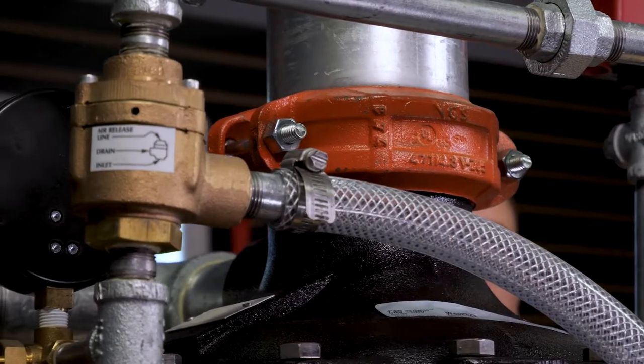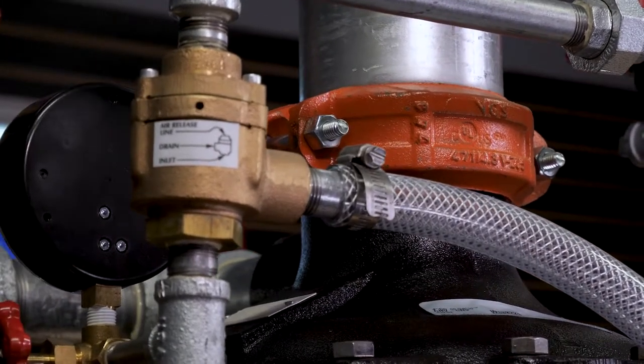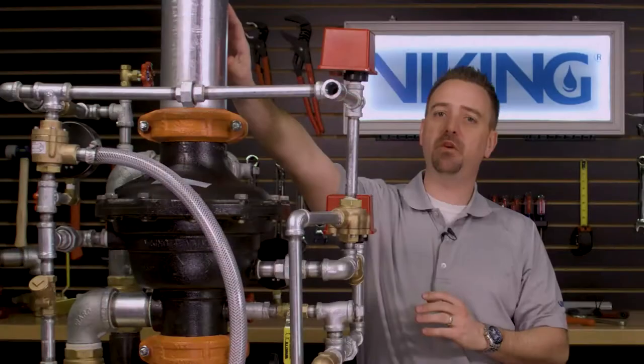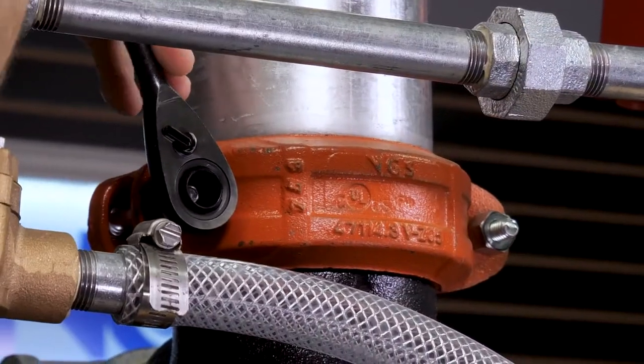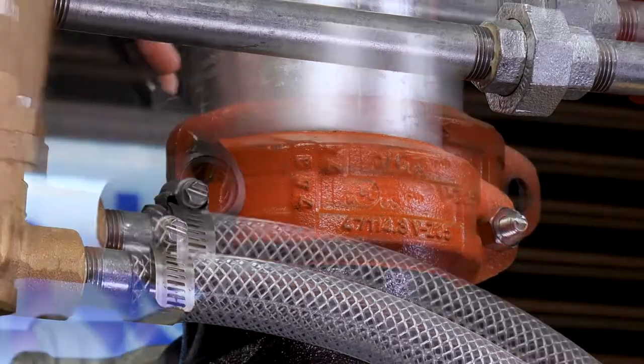We will first need to remove the cover from the body of the valve. We will need to remove the spool piece that's on top of the cover by removing both of the couplings connected to the spool piece.